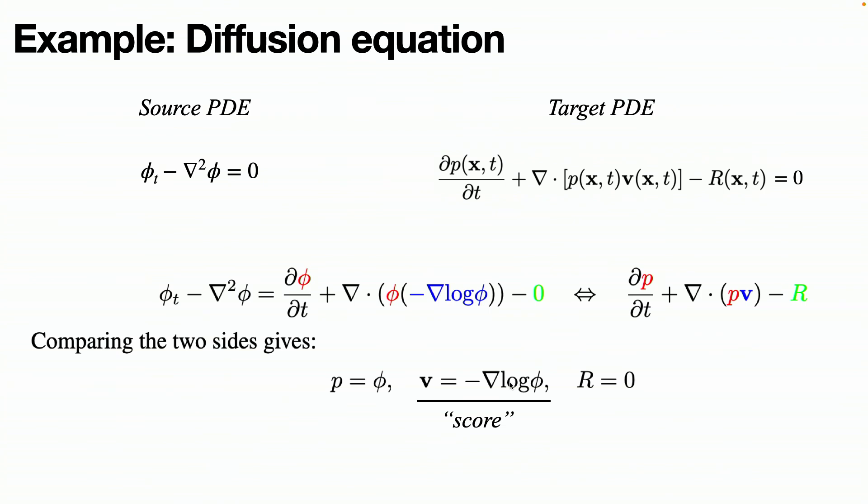The amazing thing here is that in the original derivation of diffusion models, there are a lot of inspiration from thermodynamics, a lot of hand-wavy arguments, but here everything is precise. You just start from a well-defined mathematical equation, rewrite it, and you automatically get this score field.